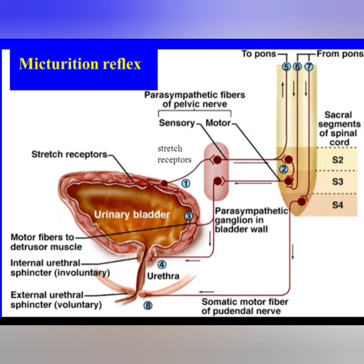If the brain says it's okay to urinate, the pons returns the signal to the spinal interneurons. This excites the detrusor muscle and relaxes the internal urethral sphincter, and urine is then voided.